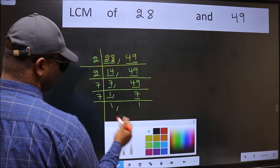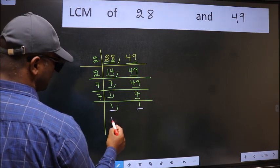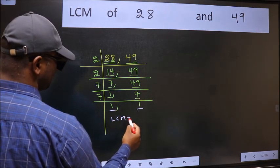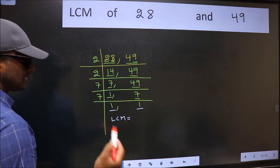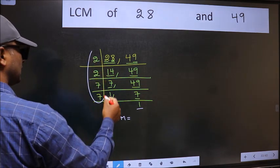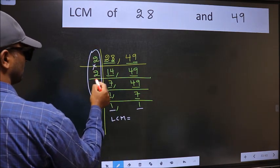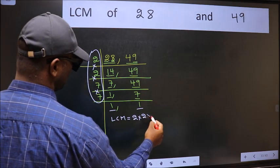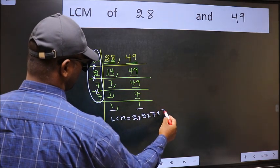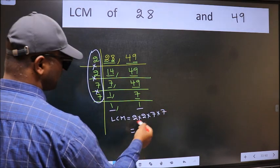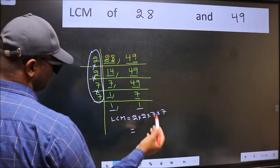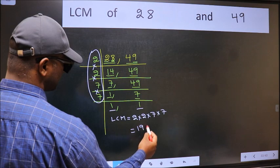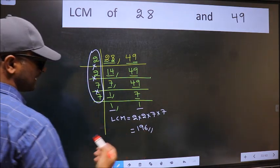So we got 1 in both places. So our LCM is the product of these numbers: 2 times 2 times 7 times 7. When we multiply these numbers, we get 196 as our LCM.